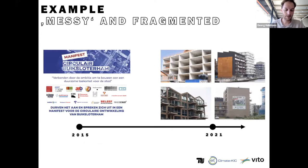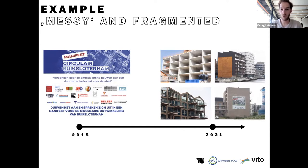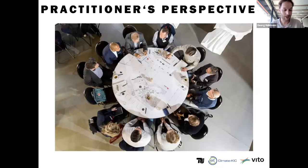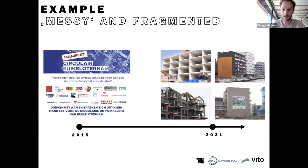A few weeks ago I was in Amsterdam doing field research on one of my PhD cases — a district that aims to become circular. They made an agreement in 2015 where more than 20 partners signed, with a policy focused on a holistic definition of circular economy including use of materials, mobility, social circularity, and more. But when I came back in 2021, what I saw was not at all successful implementation. There are some innovative developments happening, but by far not reaching the ambitions of what was planned.